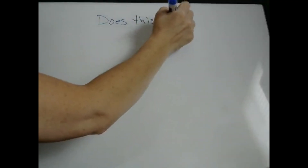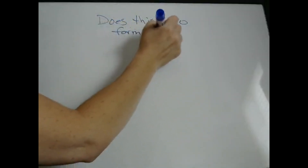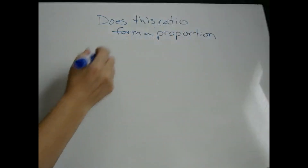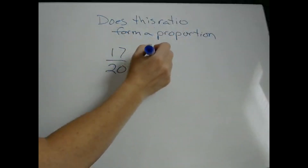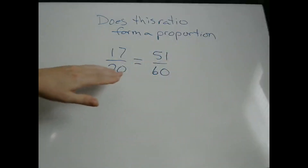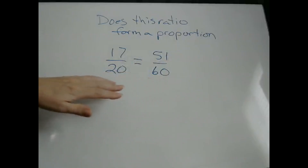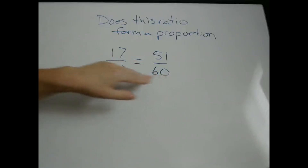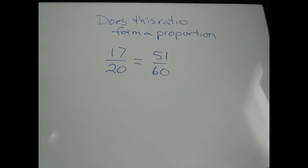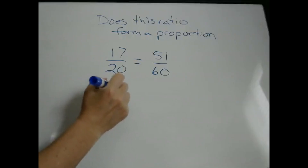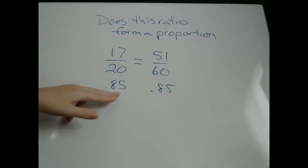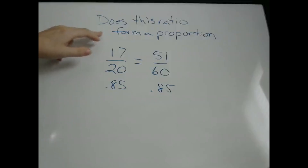All it means is they're going to give you two fractions and ask if they are equal. If they are equal, then the answer is yes, the ratio forms a proportion. So we compare the two fractions and see if they're equal. The first way: 17 divided by 20 gives us 0.85, and 51 divided by 60 — plug that in your calculator — also gives 0.85. They are equal, so the answer is yes, it does form a proportion because these two fractions are the same.